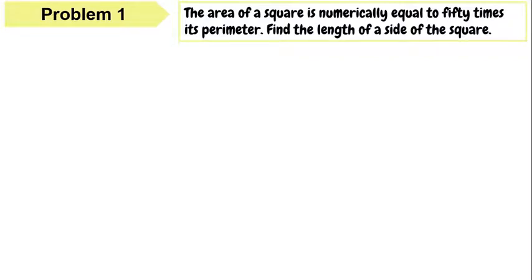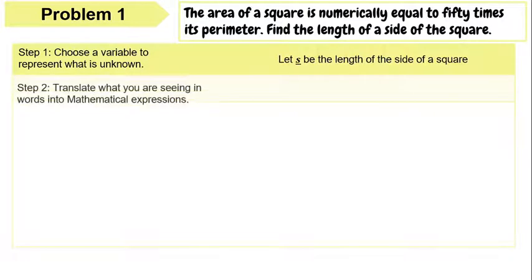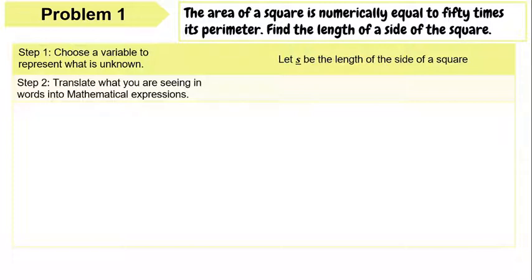Now let's have problem 1. The area of a square is numerically equal to 50 times its perimeter. Find the length of a side of the square. For our solution, step 1: choose a variable to represent what is unknown. In this problem, let s be the length of the side of a square. Then for step 2, we're going to translate the words into a mathematical expression: s squared is equal to 50 times 4s, because the perimeter of a square is 4s, and the area of a square is s squared.